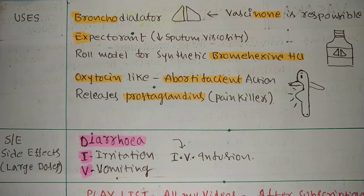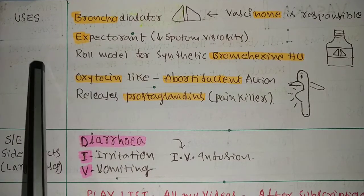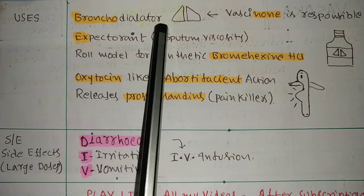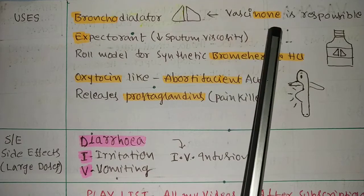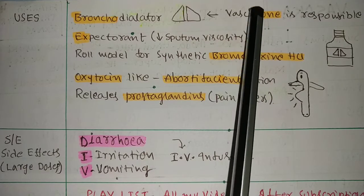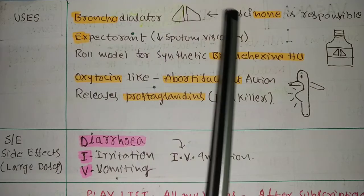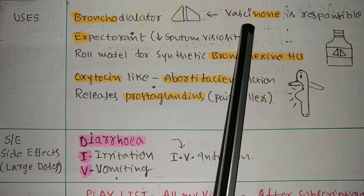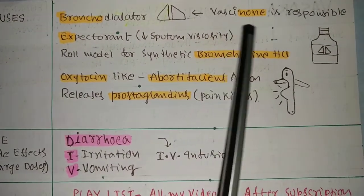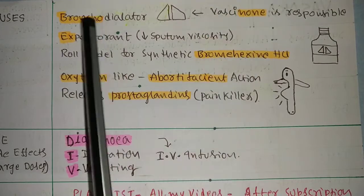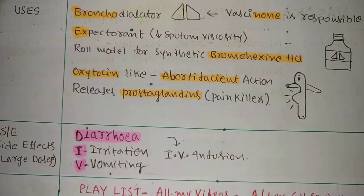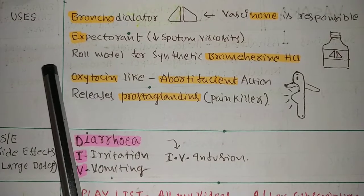We came to the end - uses. It acts as a bronchial dilator. I already told you, vasicinone is mainly responsible for the bronchial dilator action. This is also asked in the examination, in the GPAT, all competitive exams: which chemical is mainly responsible for bronchial dilator action in Vasaka? Vasicinone is the main response.